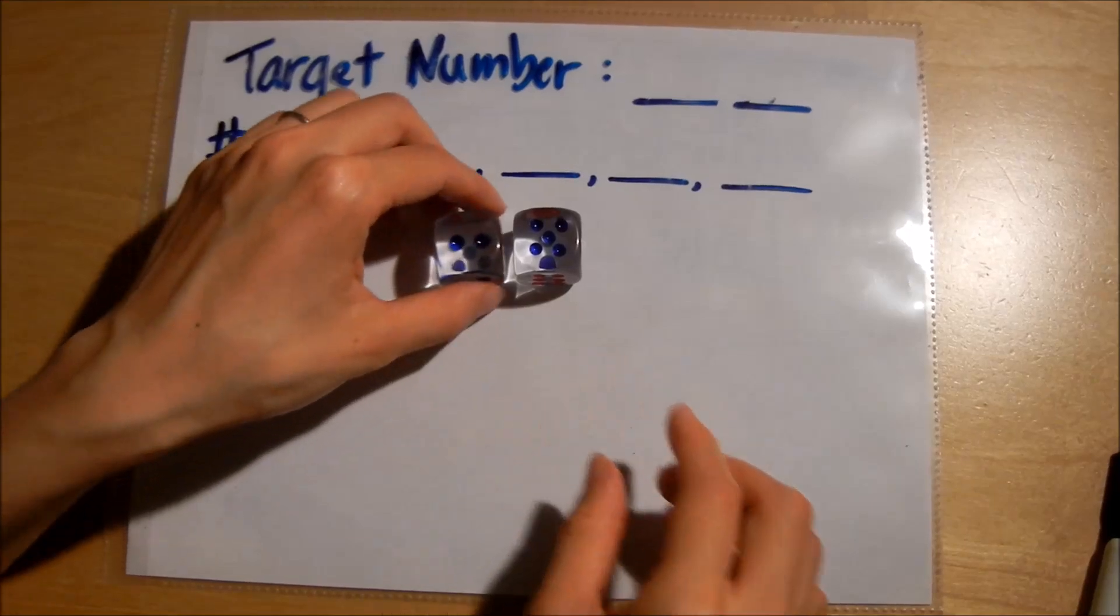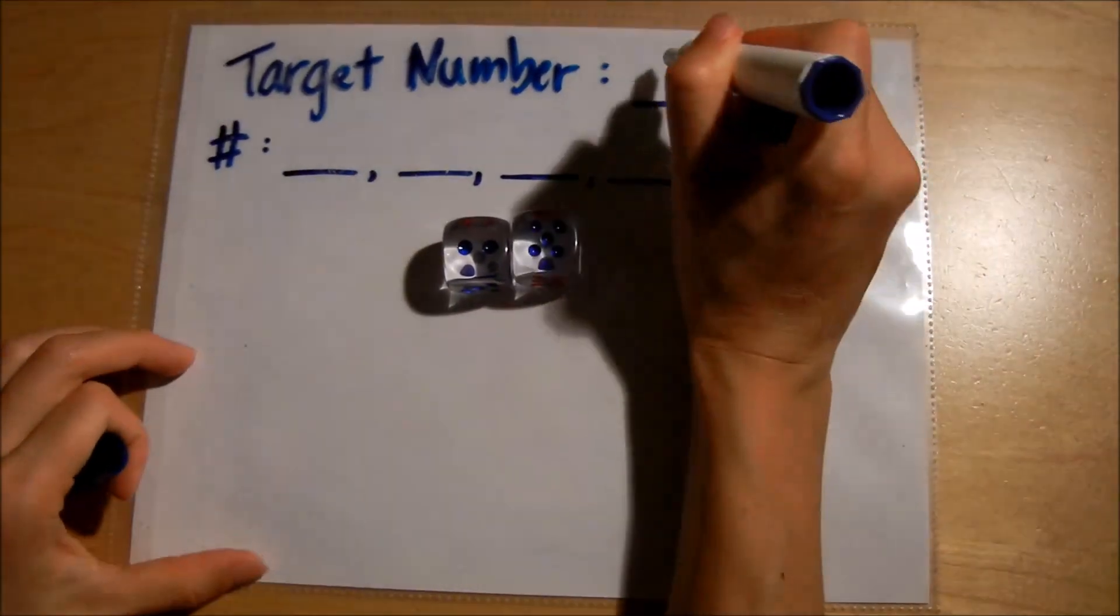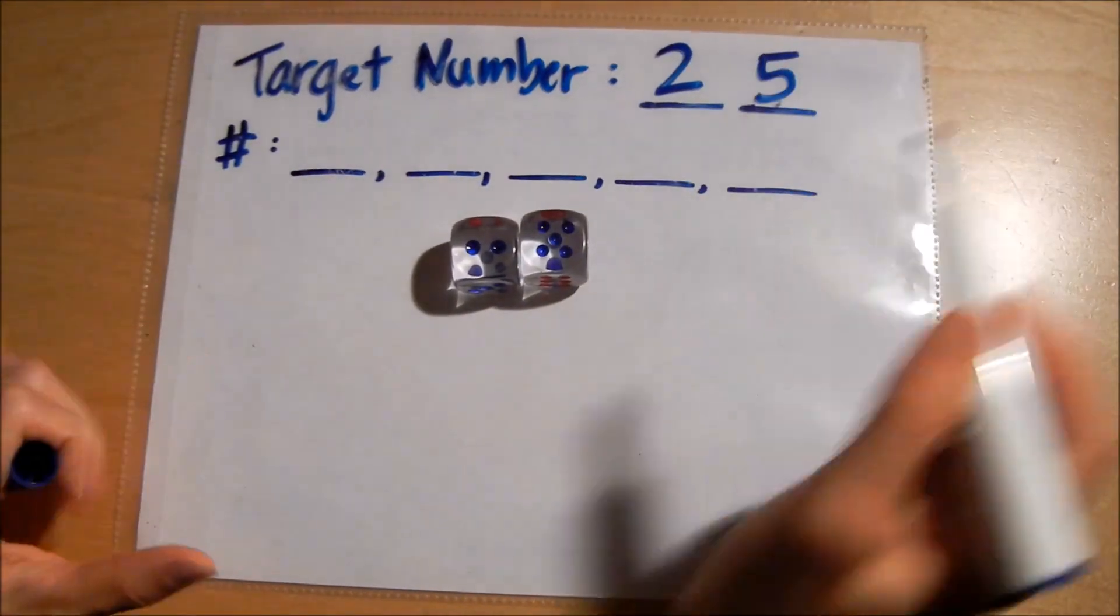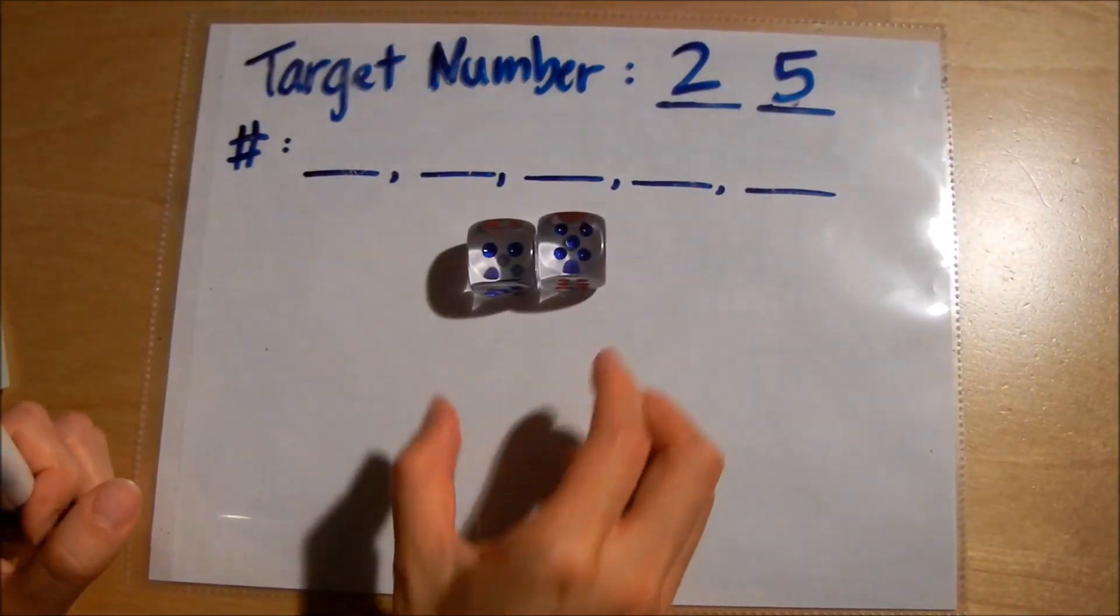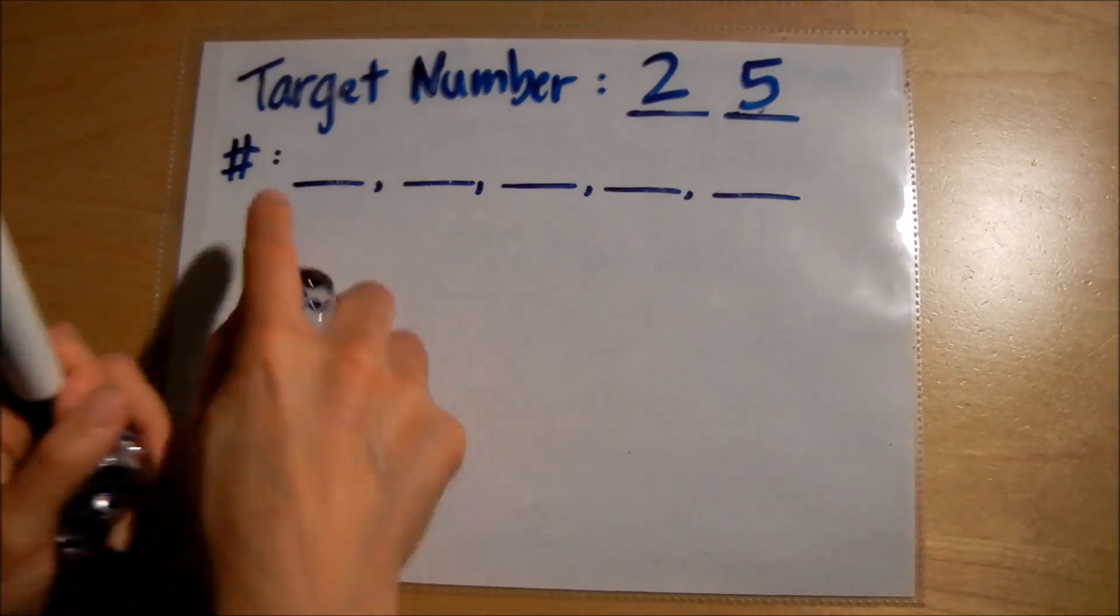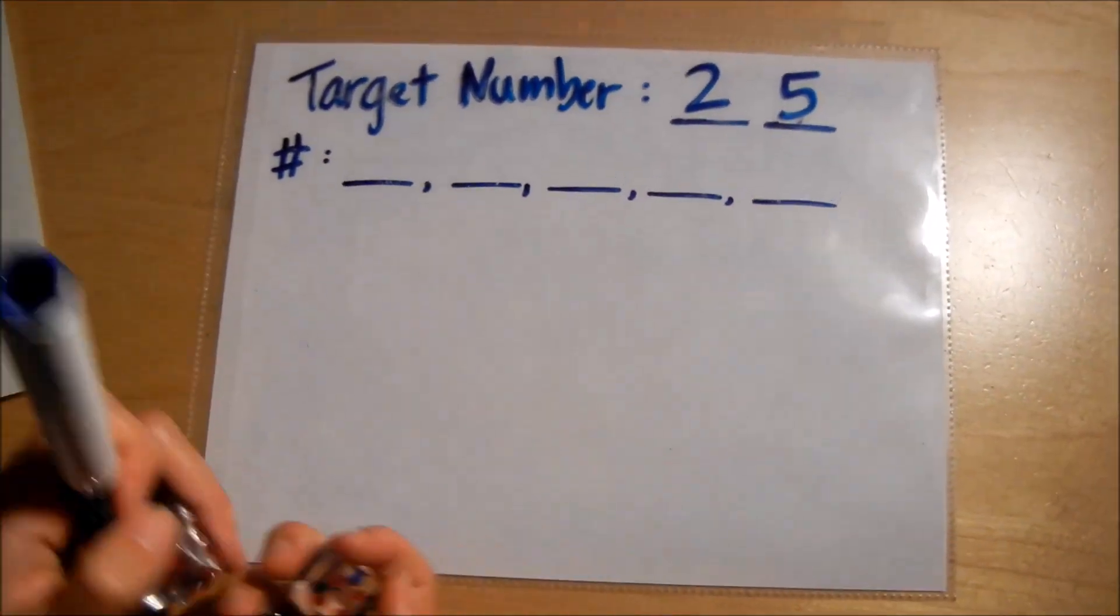For this example, I'm just going to make it 25, and this is the only time you put two dice together and make a two-digit number. For the rest of these, each of the numbers can only be used as single-digit numbers.